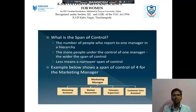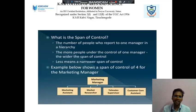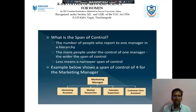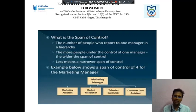Next we discuss about Span of Control — the number of people who report to other managers in a hierarchy. The more people under the control of one manager, the wider the span of control; fewer people means a narrow span of control. For example, the diagram shows a span of control of four for a marketing manager, with four categories: marketing assistance, marketing research, tele-sales supervisor, and customer care assistance.